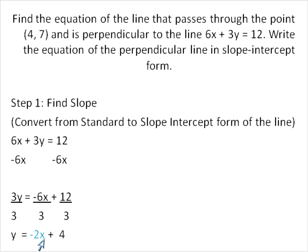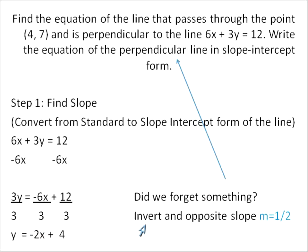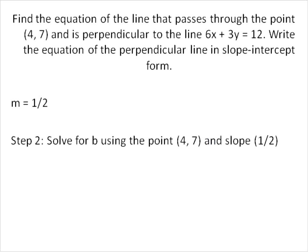Our slope is -2. But we're looking for a line that is perpendicular — so this line has a slope of -2, and we need the opposite reciprocal. We invert and multiply the slope times -1. So our slope of -2 becomes positive 1/2. That will be the slope we write down and use — that's the slope of the line we're trying to solve for.